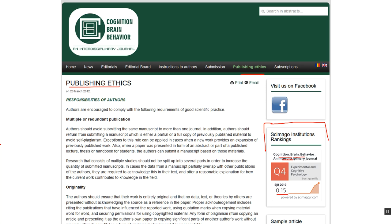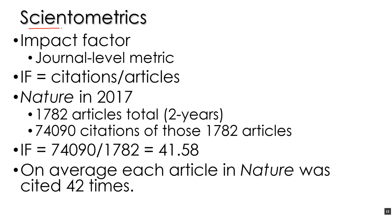Scientometrics is the measurement of publishing in science fields. This field looks at how you can quantify and rank the publications of an author, a researcher, or a journal. There are two major scientometric metrics we look at: impact factor, which is a journal-level metric, and the H-factor, which is an author-level metric.